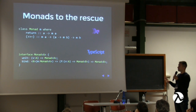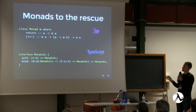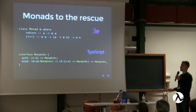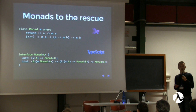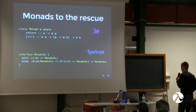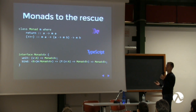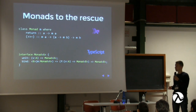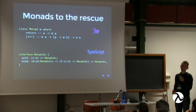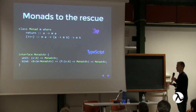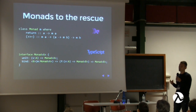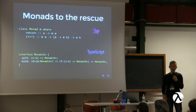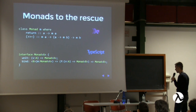You can see the signatures — not the implementation. The unit function takes a value of type A and returns a monad of type A. Bind takes a monad of type A, a function from A to a monad of type B, and returns a monad of type B. It might not be immediately straightforward if you're unfamiliar with monads, but we'll try to clear it up. Also bear in mind that these functions must respect certain laws.